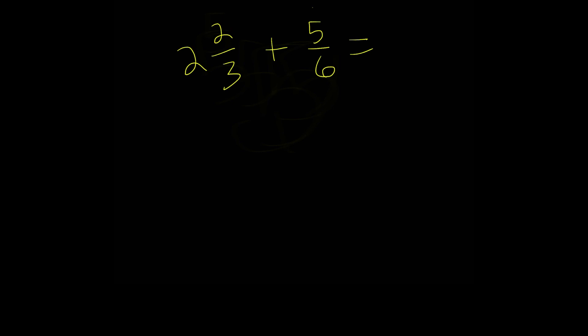So let's convert two and two-thirds into an improper fraction. How we do that is we multiply the whole number with the denominator first. So we do two times three, that's six, and then we're going to add our numerator to that. Our numerator in this case is two, and this equals eight.